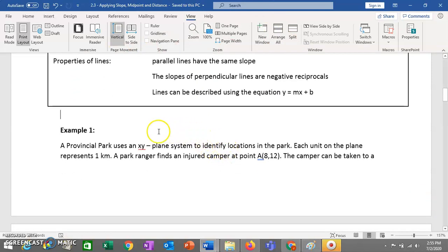So we'll start with an easier problem. Example 1. A provincial park uses an XY plane system to identify locations in the park. So they have like a grid and each location in the park has a set of coordinates. Believe it or not, there are places that kind of do this. Each unit on the grid represents one kilometer.